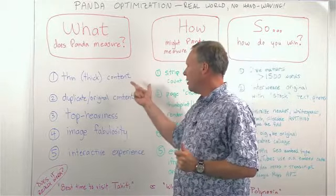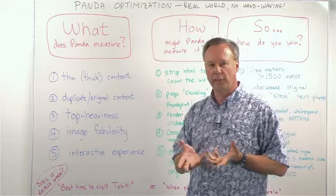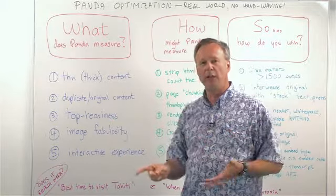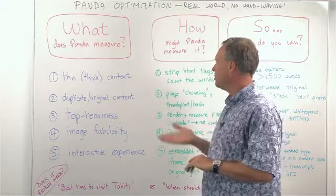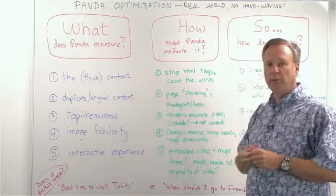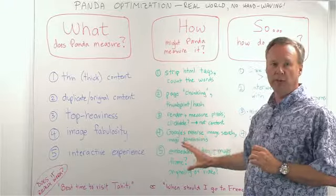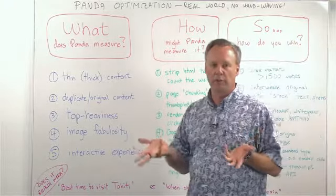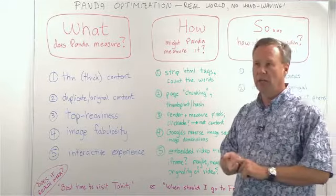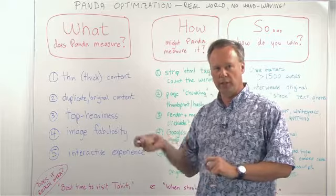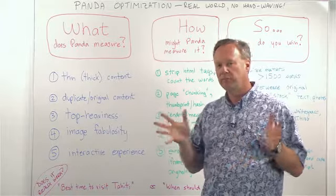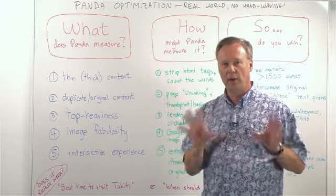First, thin vs. thick content. A lot of sites got penalized when Panda first came out because the site had broken content out into many pages with just a few sentences on each. So here we're talking about how much text there is per page. How might Panda measure this? It's probably the easiest piece — very simple programmatically: strip all the HTML tags out and do a word count. There was a study done by SerpIQ — there'll be a link in the notes — showing that for reasonably competitive terms, you needed 1,500 to 2,500 words on a page to rank on page one.